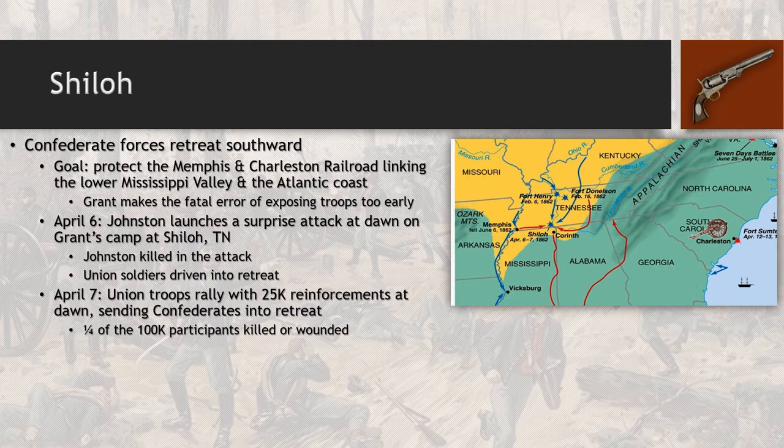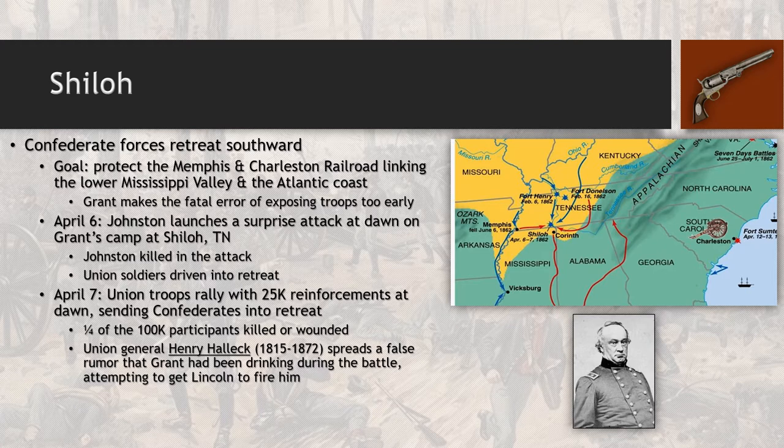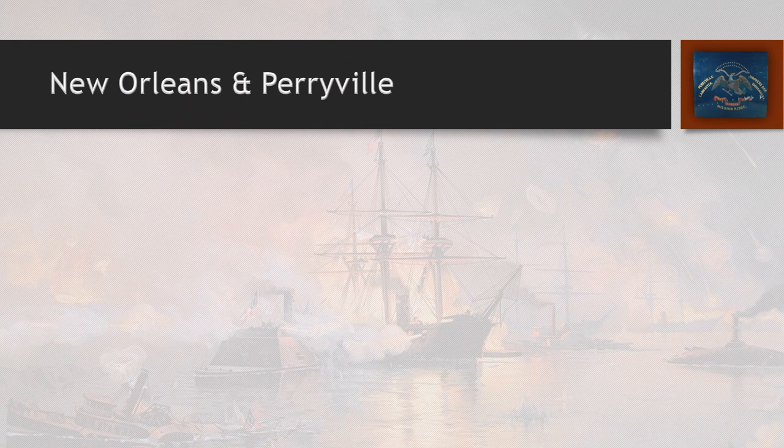In the Battle of Shiloh, one fourth of 100,000 participants are either killed or wounded — upward of 25,000 casualties. Union General Henry Halleck then begins spreading false rumors about Grant, claiming Grant had been drinking constantly during the battle, simply because Halleck wanted Grant's job. Halleck petitions Lincoln to fire Grant, but Lincoln refuses, though he ends up giving Halleck a field command.